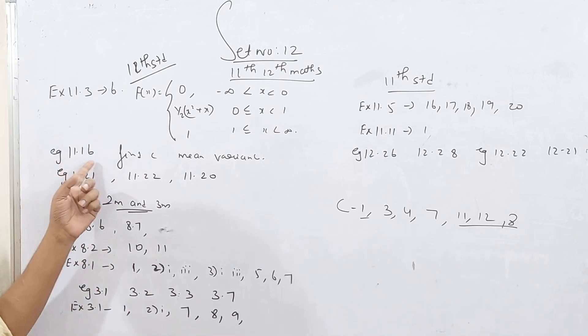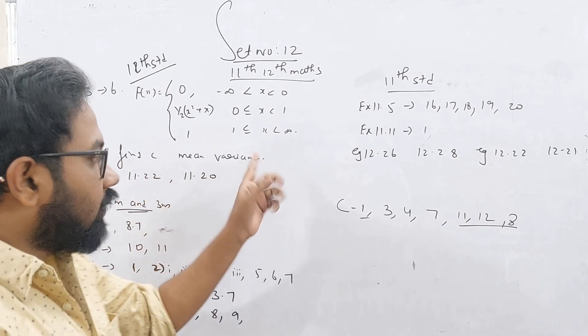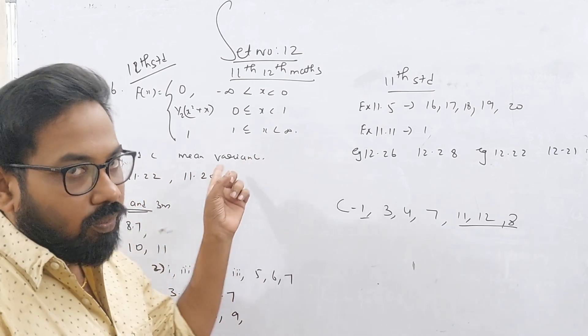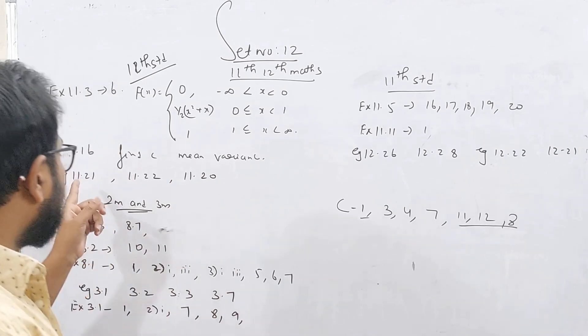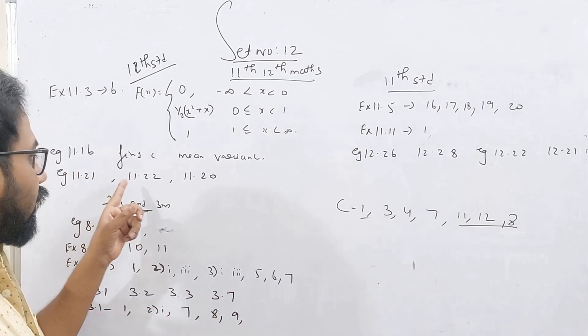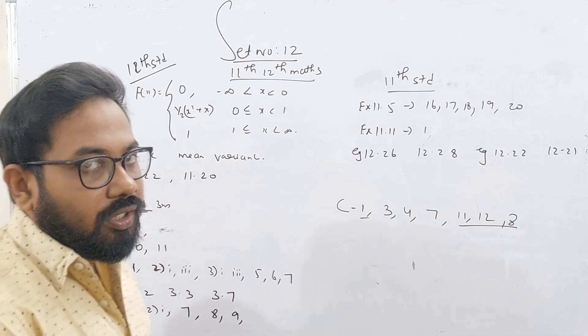Example 11.16 — find C and mean variance. Examples 11.21, 11.22, and 11.20 are covered in this section.